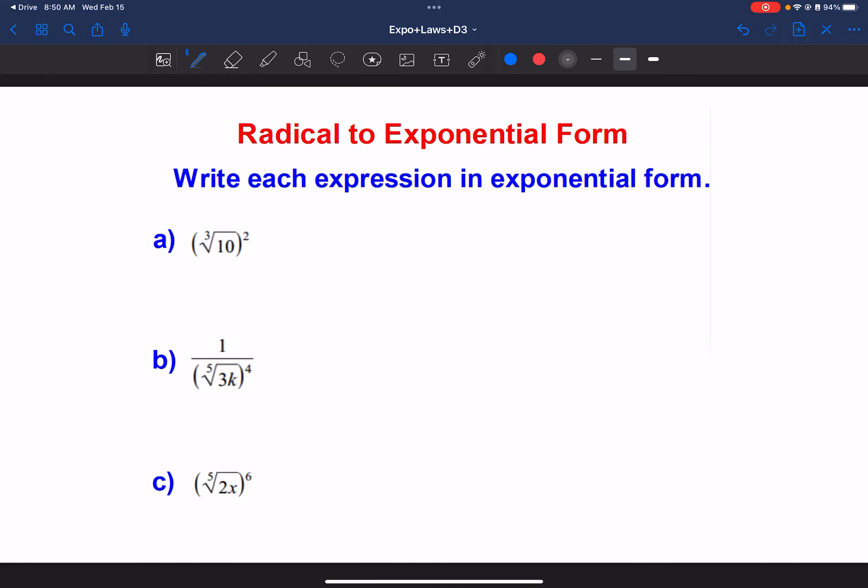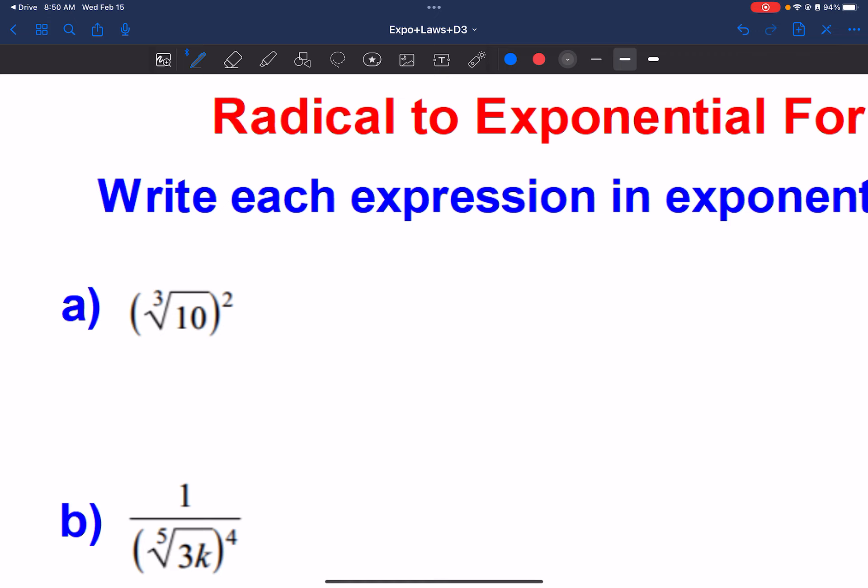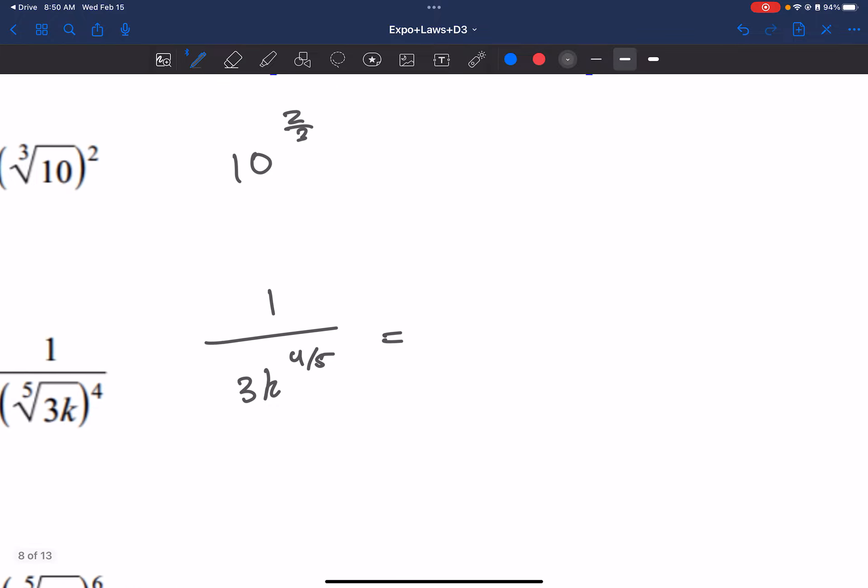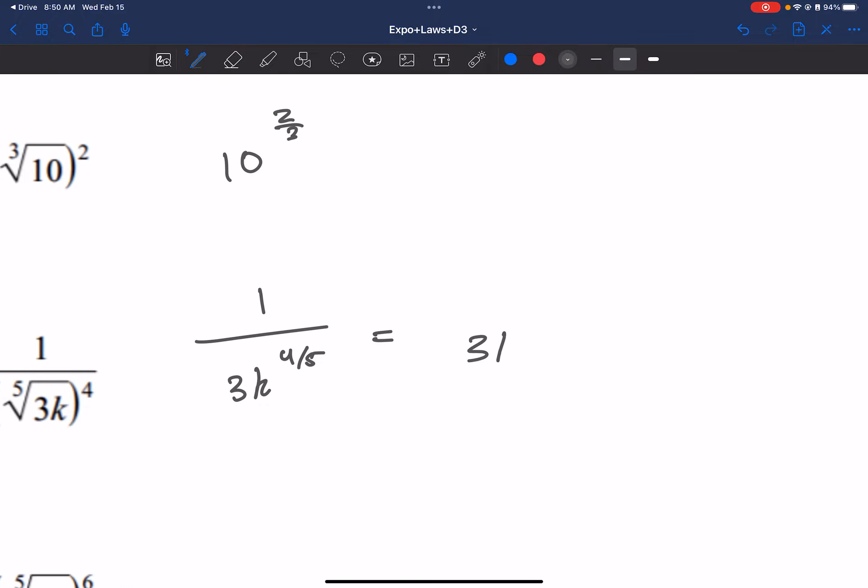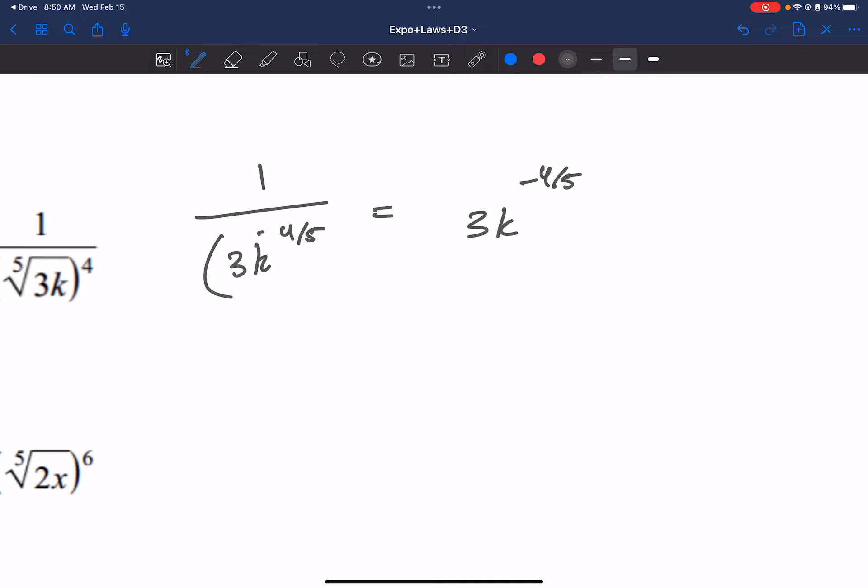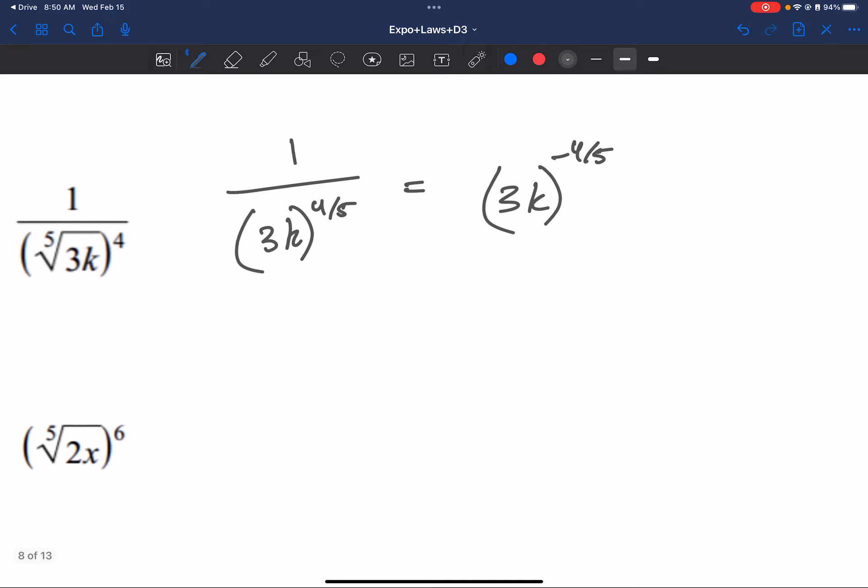All right. Now, if we're going the other way, same general idea. 10 to the 2 3rds or 3k to the 4 5ths. But that's on the bottom of the fraction. So we can even write it as 3k to the negative 4 5ths if we wanted to bring it to the top. Also, I should put parentheses around this. Otherwise, it wouldn't be correct. And finally, 2x to the 6 over 5.